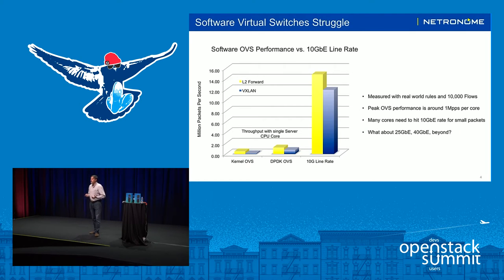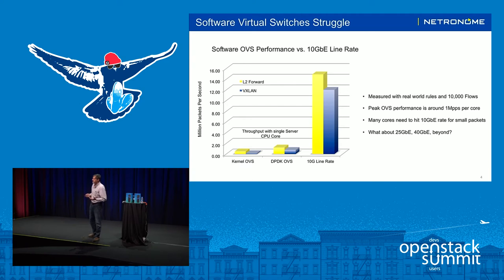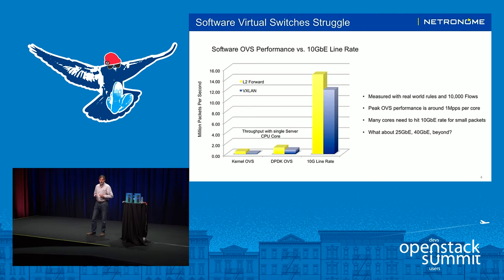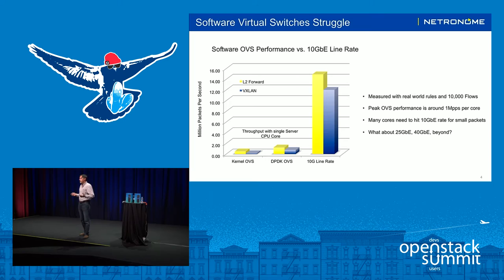Unfortunately, that's exactly what's occurring today. This graph illustrates the performance of a typical server-based networking data path based on OpenVSwitch, or OVS, and the performance we get running it in software on an x86 CPU. You see both a kernel-based and a user-space implementation for layer 2 or tunnel-based processing in the context of OVS. Normalized per core, it roughly hits about a million packets per second. That's not even close to 10 gig line rate, and many cores would be needed to support it. Furthermore, operators are moving to 25 gig, 40 gig, and beyond — so this is a real problem today and it's getting worse.